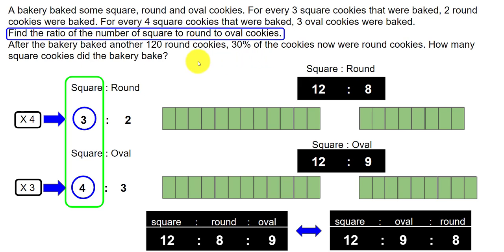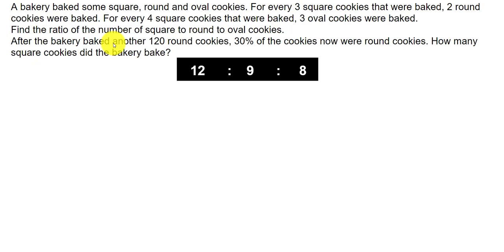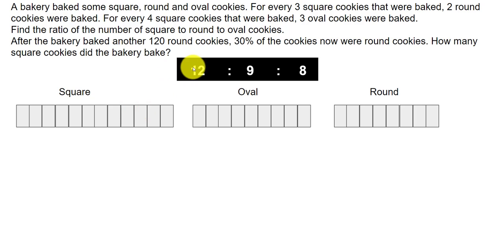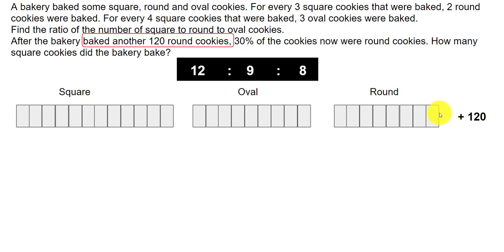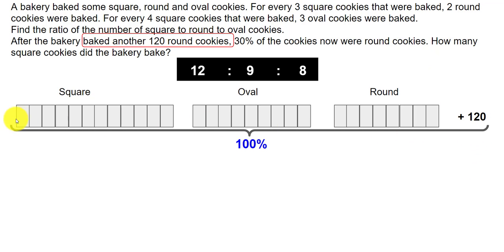The second question: after the bakery baked another 120 round cookies, 30% of all cookies were round. How many square cookies did the bakery bake? The change is that 120 additional round cookies were added — there's no change in square or oval. Everything together, including the 120 extra round cookies, forms 100%, of which round cookies alone form 30%.